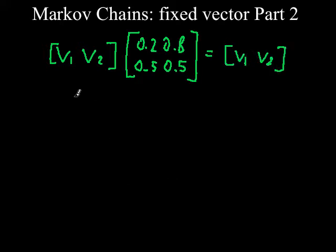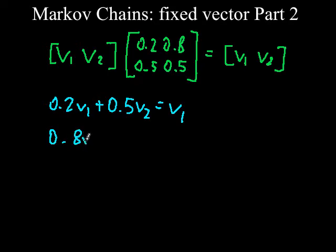Now we solve for v1 and v2. This is done by multiplying the matrices out by hand to get the equations 0.2v1 plus 0.5v2 equals v1, following the rules of matrix multiplication, and 0.8v1 plus 0.5v2 equals v2.